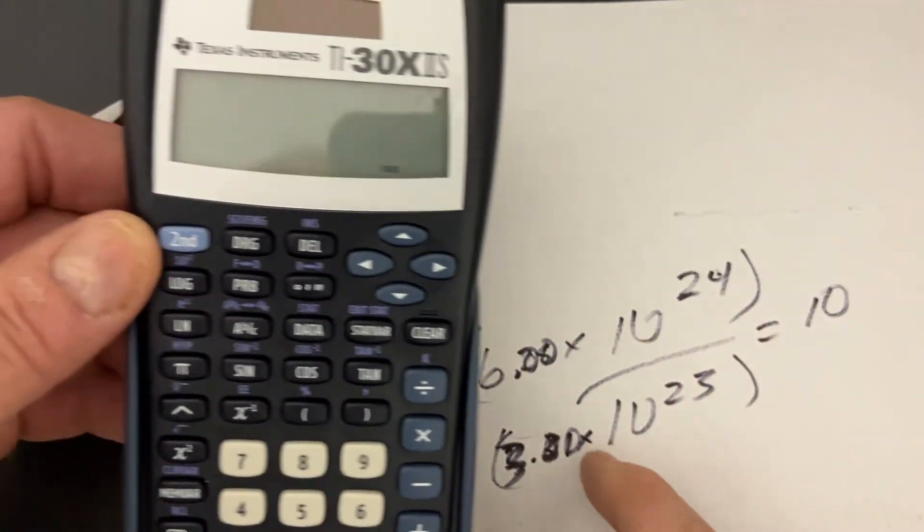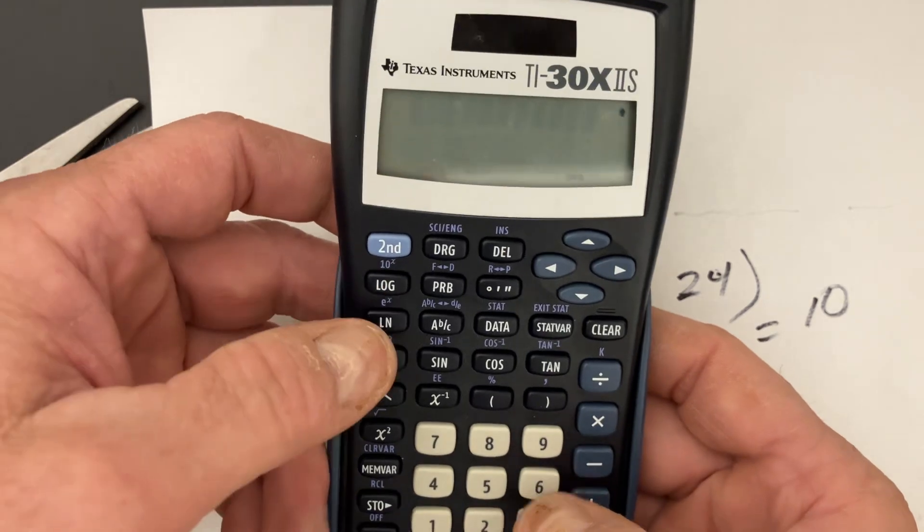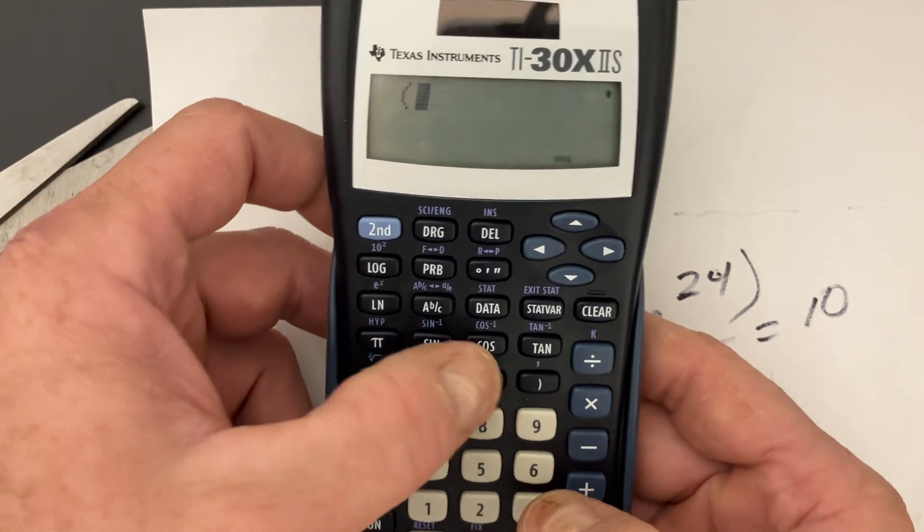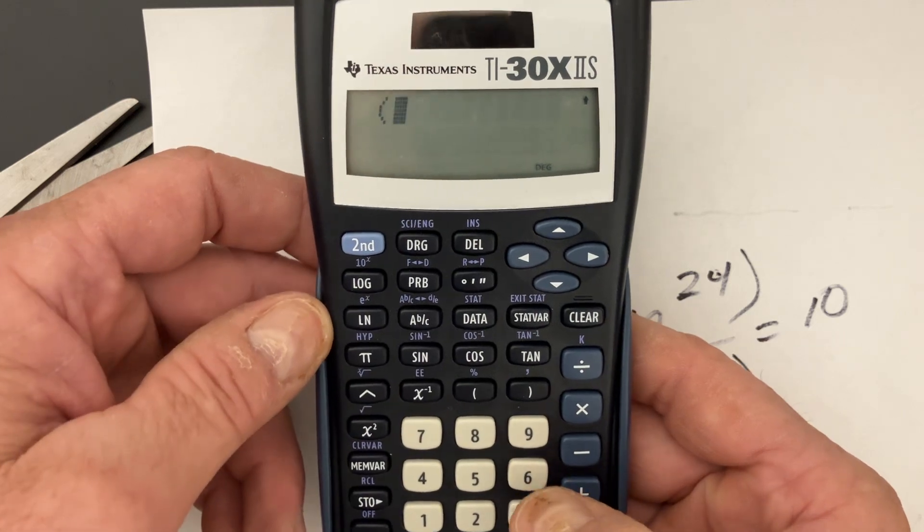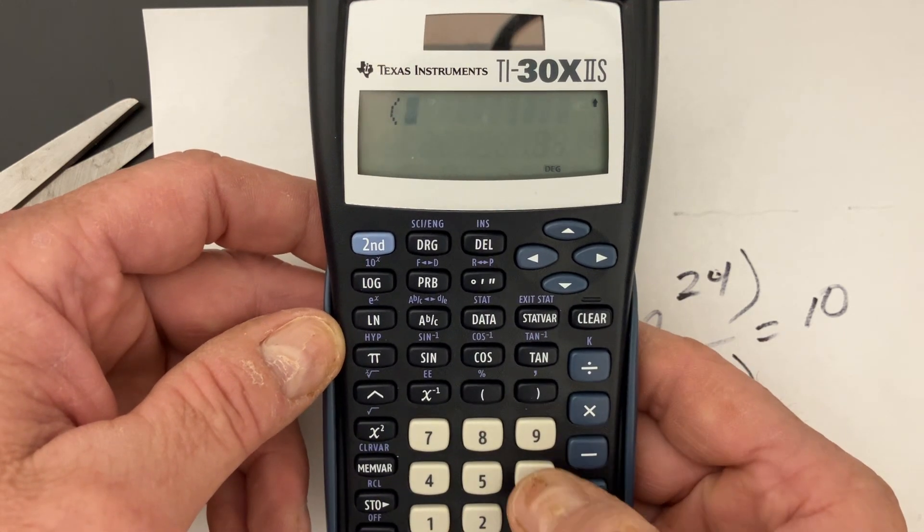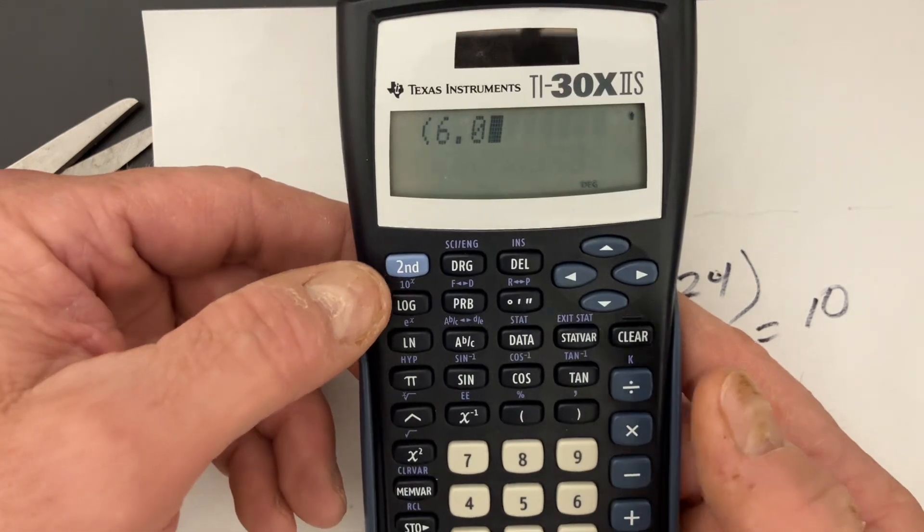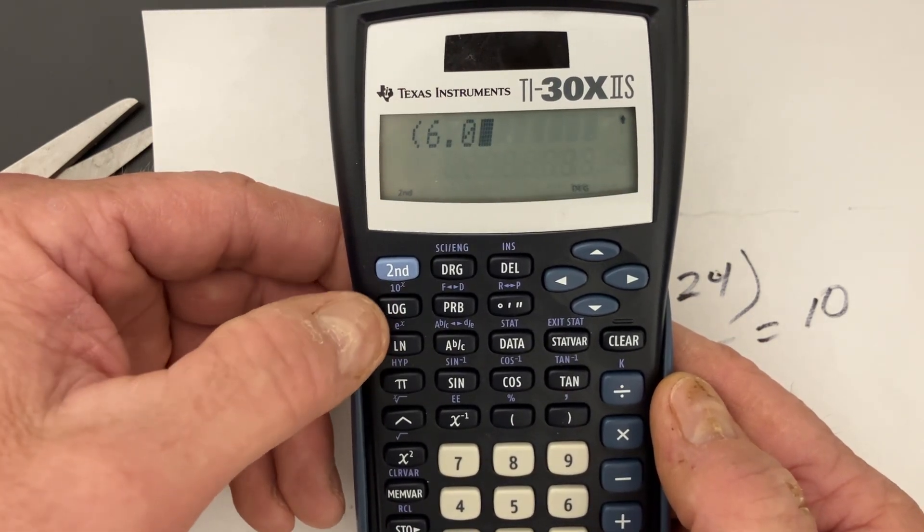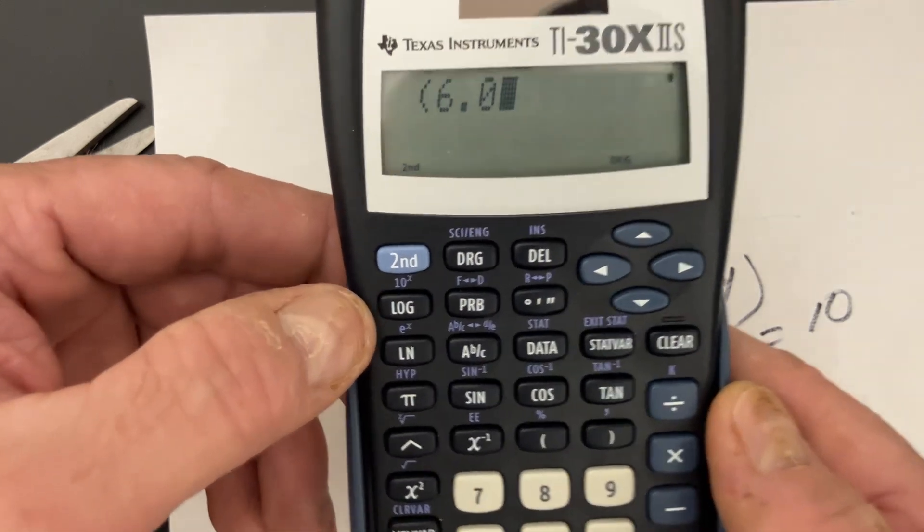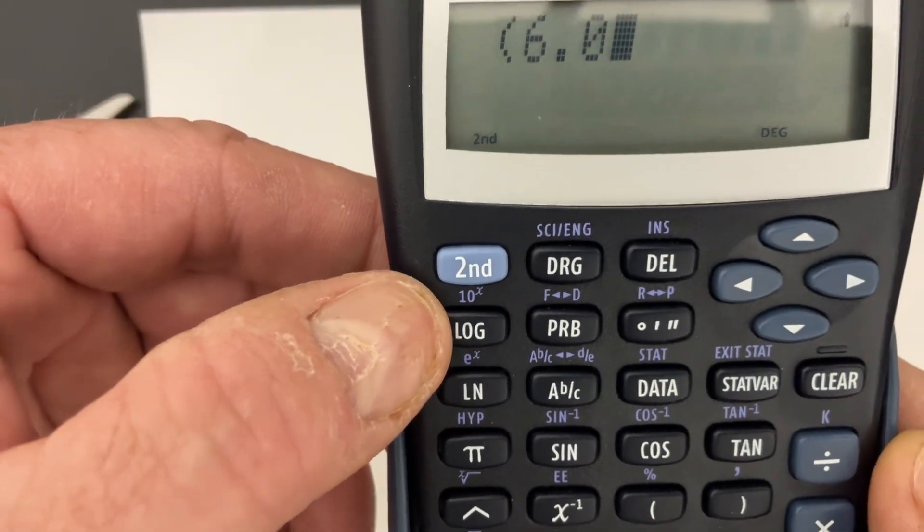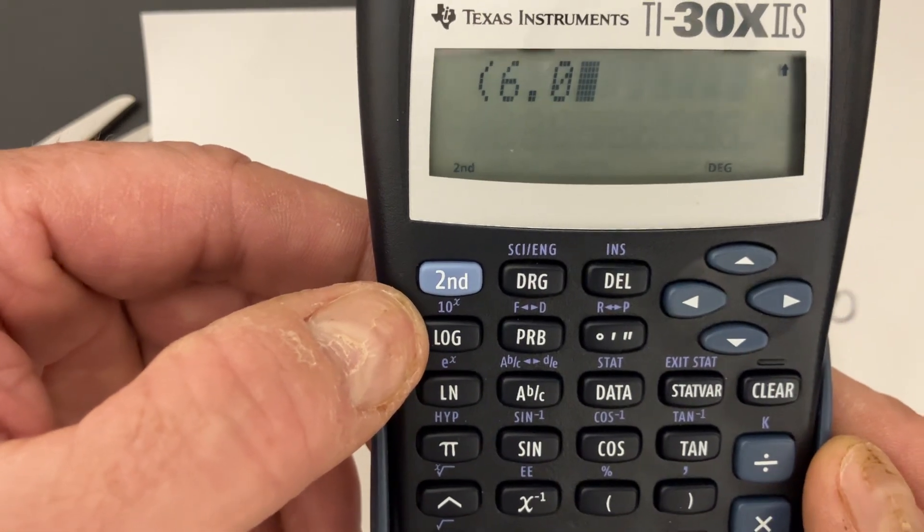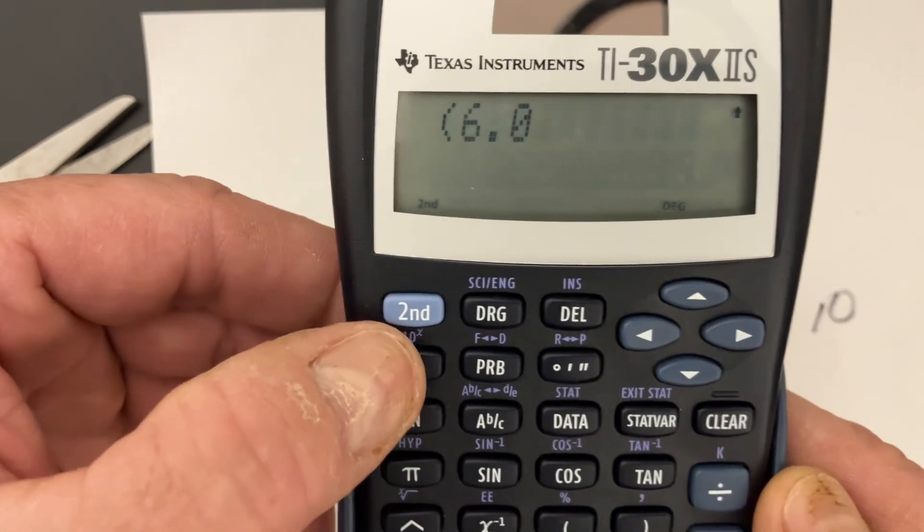But I'm just going to use full scientific notation. So the first thing you want to do is use a bracket, and I'm going to put that bracket term first. And then I'm going to say 6.0, and then hit second. That's going to give you the ability to hit this log, but above the log term there's a 10 to the X. So I hit second so I can use the blue term there.